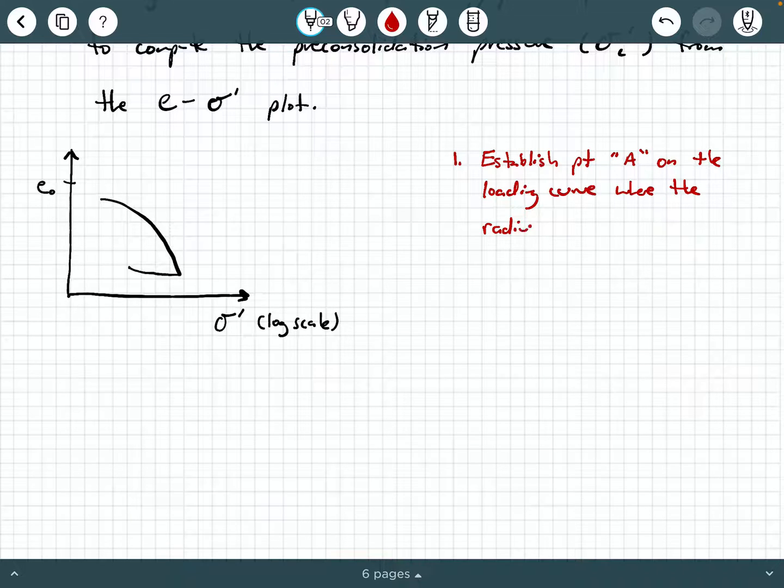So what Casagrande said was, step one, you need to establish point A on the loading curve where the radius of curvature is minimum. So you do this visually. You look at this plot and you look at the loading curve here and you observe that the radius of curvature is a minimum about right here. Now, how do you know that? Well, think about this. When you have a minimum radius of curvature, that means that the curve is more curvy. It's more curvy.